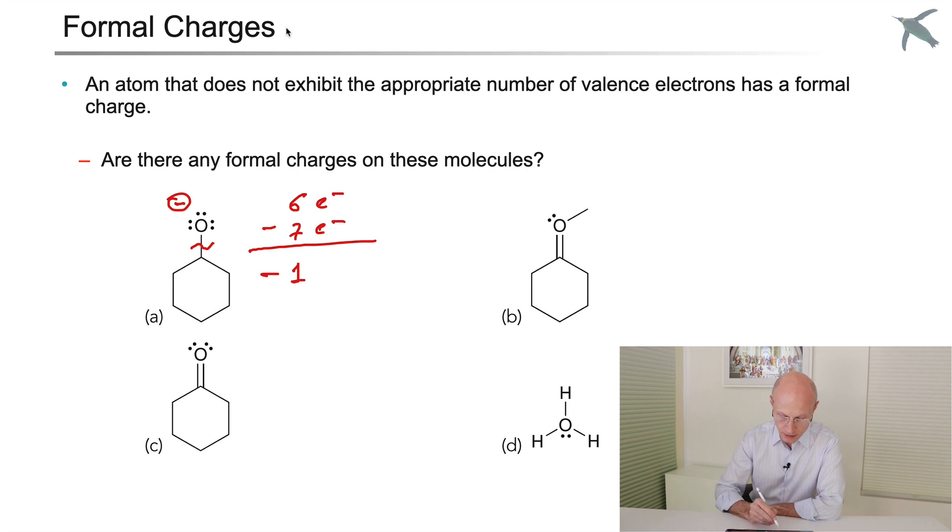Let's do the same thing for this structure. Looking at the oxygen again, I will break homolithically the double bond and this bond with the metal. How many electrons does it have? Two, three, four, five. Normally, oxygen has six electrons. In this case, it has five. So it has a charge of plus one. It's missing one electron.